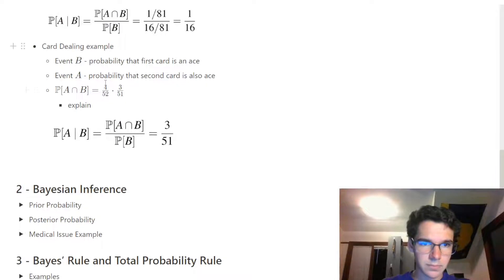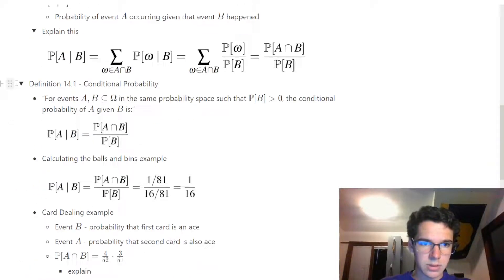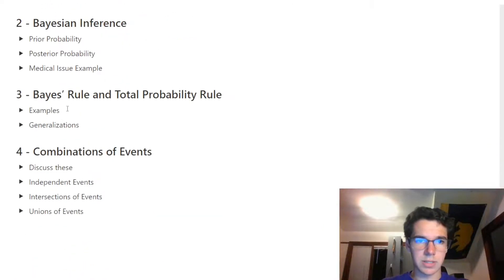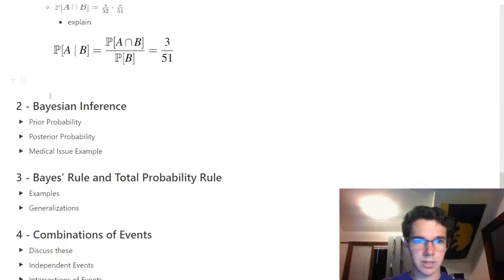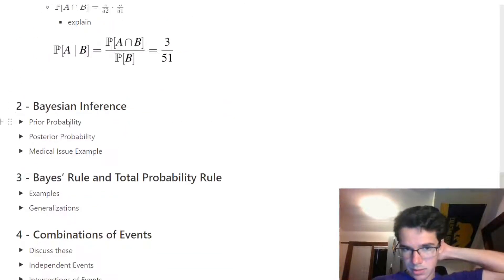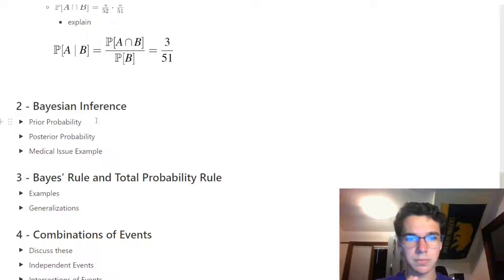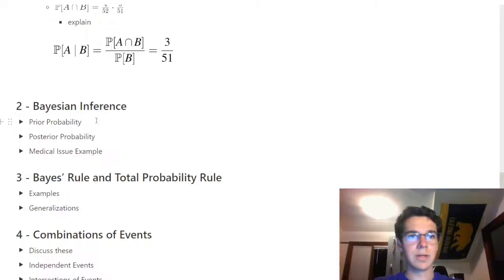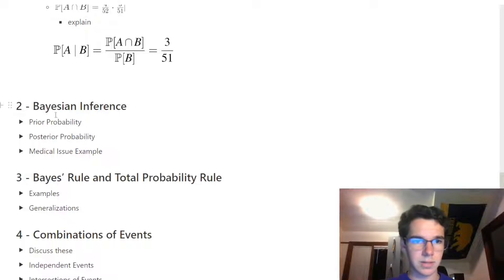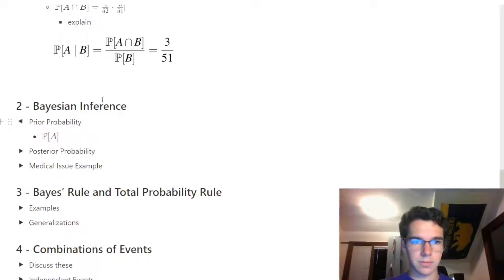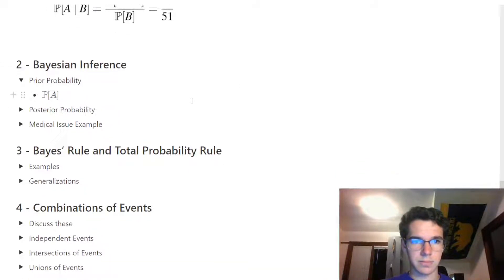If we compute this, P(A∩B) would be on top and P(B) = 4/52 on the bottom. The 4/52 cancels out, and we're left with 3/51. Those are some examples. Now we're going to get into two important equations we'll use to derive just about everything else in this note.